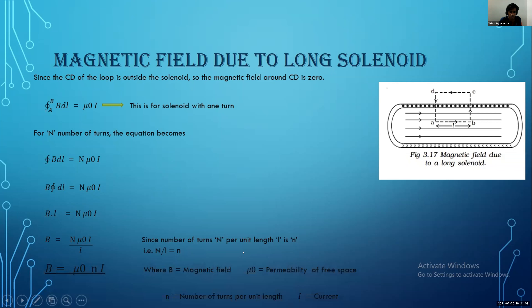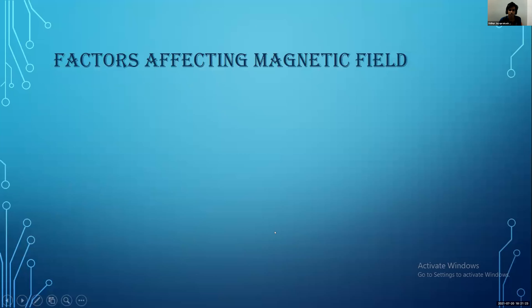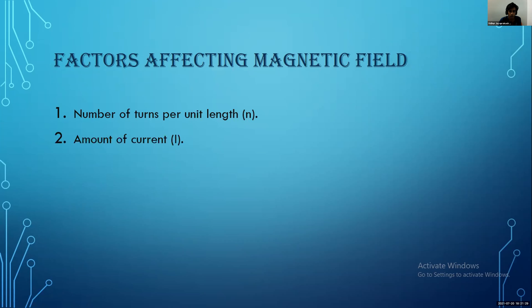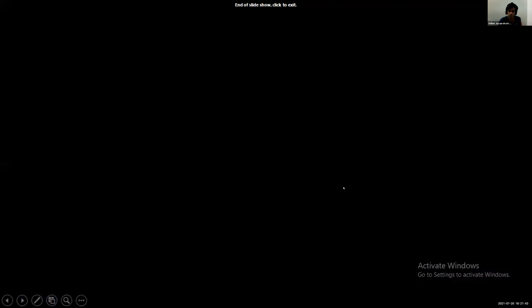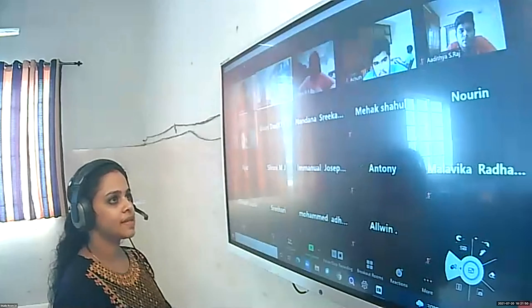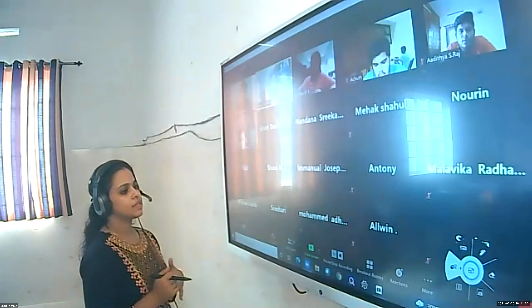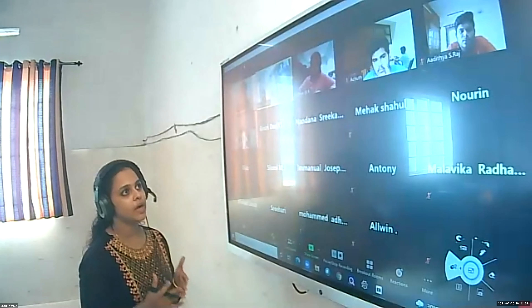This equation applies for a solenoid with one turn. For N number of turns, it becomes: closed integral B dL equals N times mu zero I. Since B is constant, it can be taken outside: B times L equals N times mu zero I, so B equals N mu zero I divided by L. Since N/L, which is the number of turns per unit length, is represented as small letter n, the final equation is B equals mu zero nI. Here B is the magnetic field, mu zero is the permeability of free space, n is the number of turns per unit length, and I is the current. Factors affecting the magnetic field: number of turns per unit length, amount of current, and the material inside the cylinder. When a soft iron core is placed in a solenoid, the strength of the magnetic field increases. That's all. Thank you.